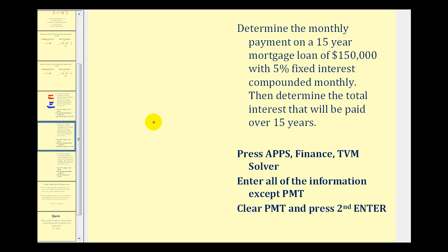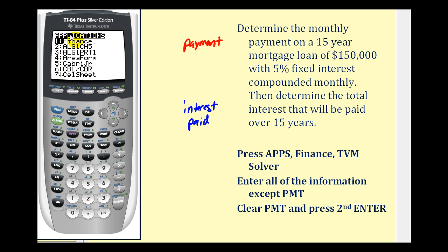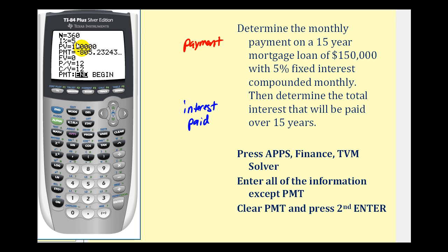Now for our second example, we're going to look at the same situation, but instead of using a 30-year mortgage, we'll take a look at the difference if we use a 15-year mortgage. So we'll press the APPS key again, Enter at the finance menu, Enter for the TVM Solver. All this information is going to be the same, but now N, the total number of payments, is going to be 12 times 15, because it's a 15-year mortgage. Everything else stays the same, so we'll go down to the payment cell, clear this amount, and press Alpha, Enter to determine the new monthly payment. The payment would be $1,186.19.